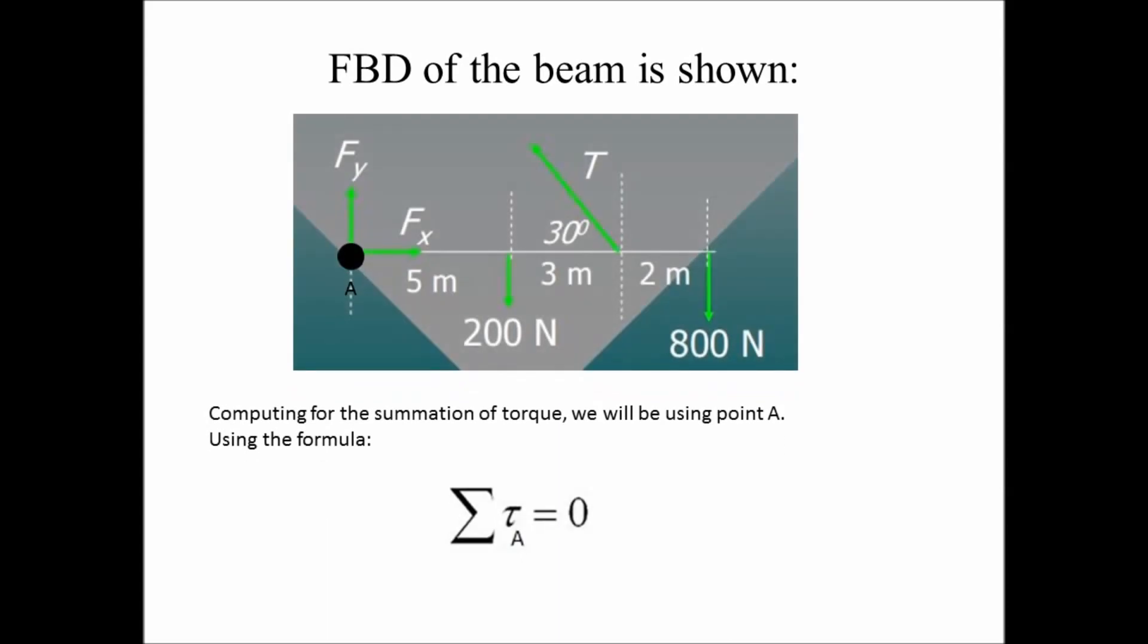Free body diagram of the beam is shown. Computing for the summation of torque, we will be using point A. Using the formula. Summation of torque at point A is equal to zero, the solution will be.